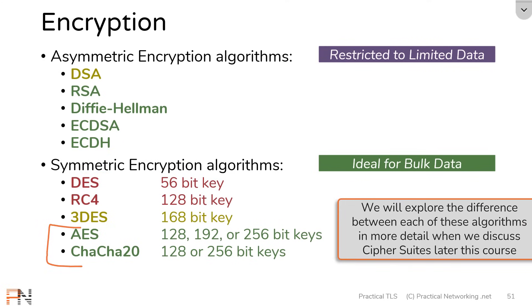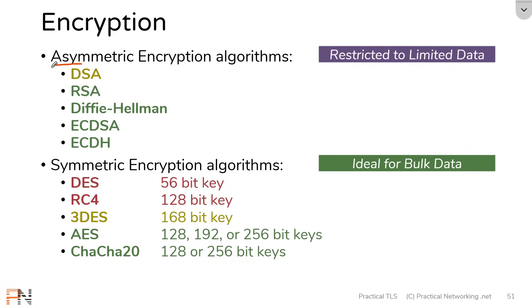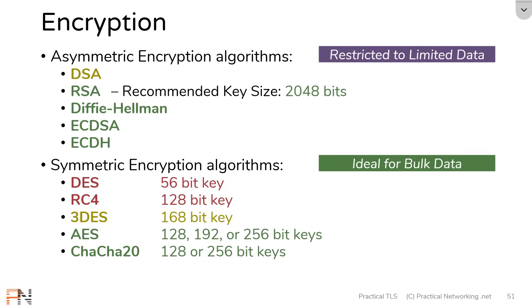Triple DES has an advertised key strength of 168 bits but is considered at best 'secure-ish' — it's a better choice than DES or RC4, but ideally you should move to using AES and ChaCha20 as your symmetric encryption algorithms. For asymmetric algorithms, key sizes vary by implementation; the recommended key size for RSA is 2048 bits, which shows the difference in key sizes between symmetric and asymmetric algorithms. The main takeaways are understanding key-based encryption and the difference between symmetric and asymmetric encryption, including the strengths and weaknesses of each.